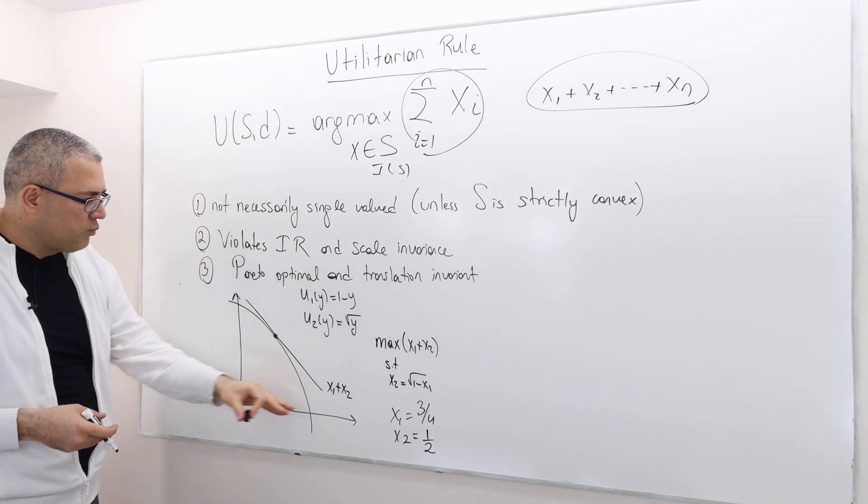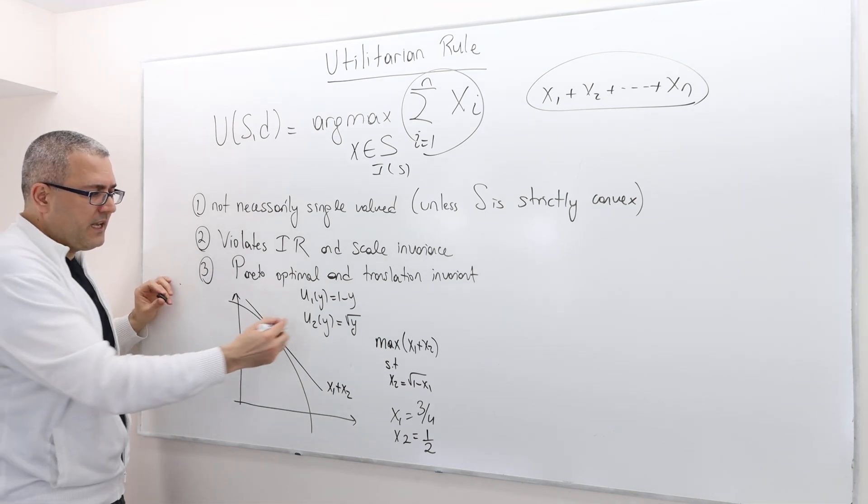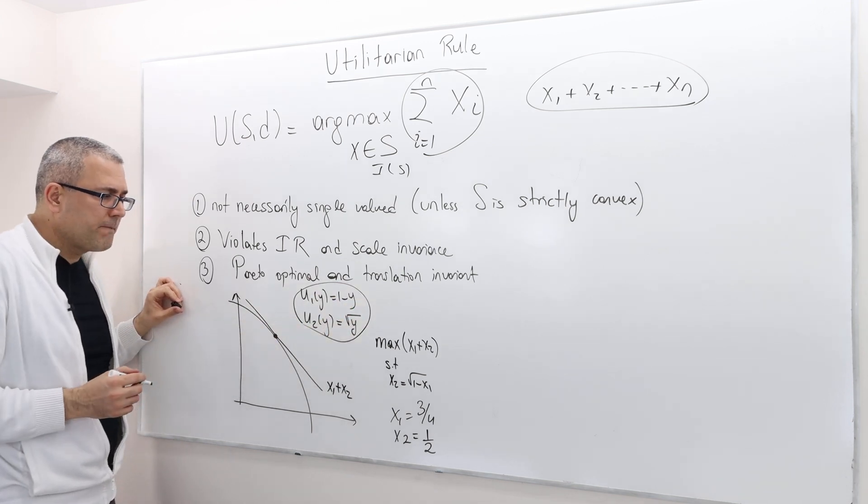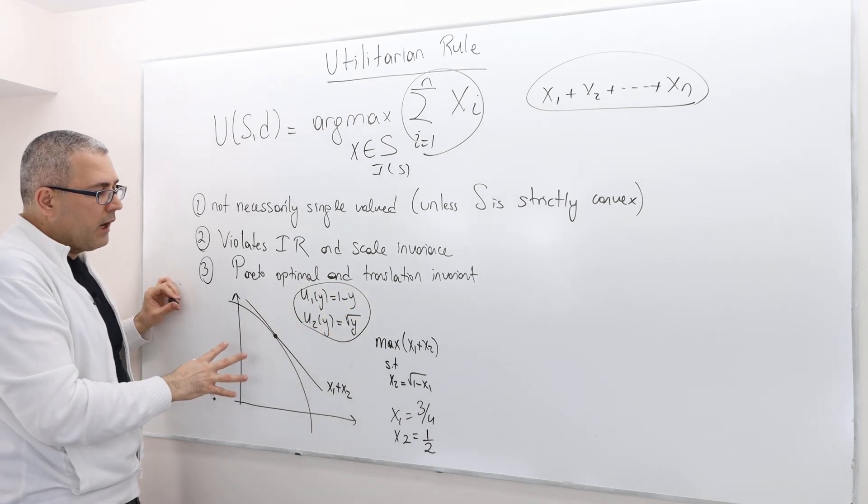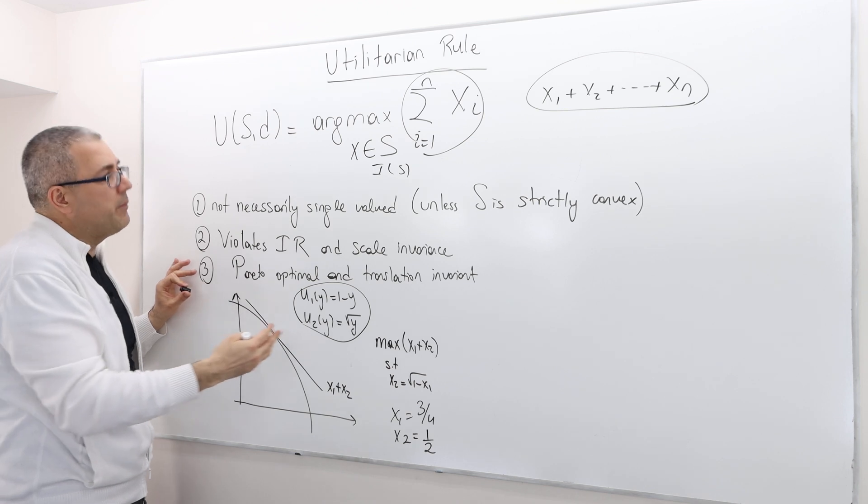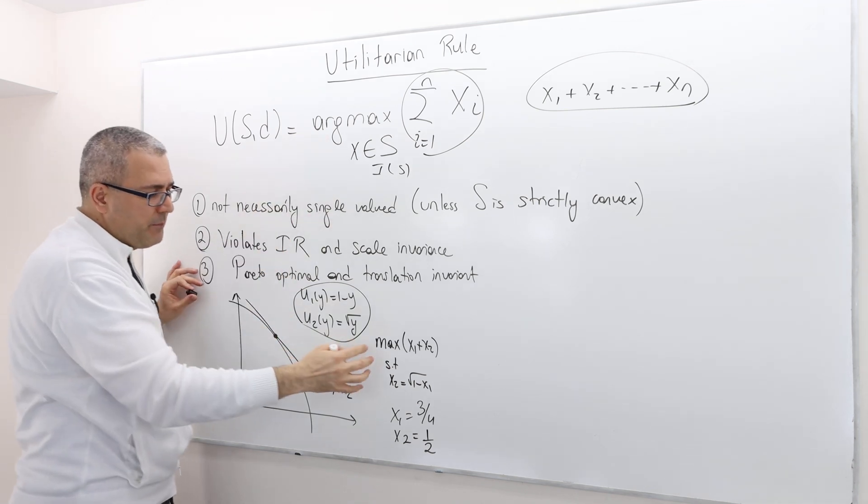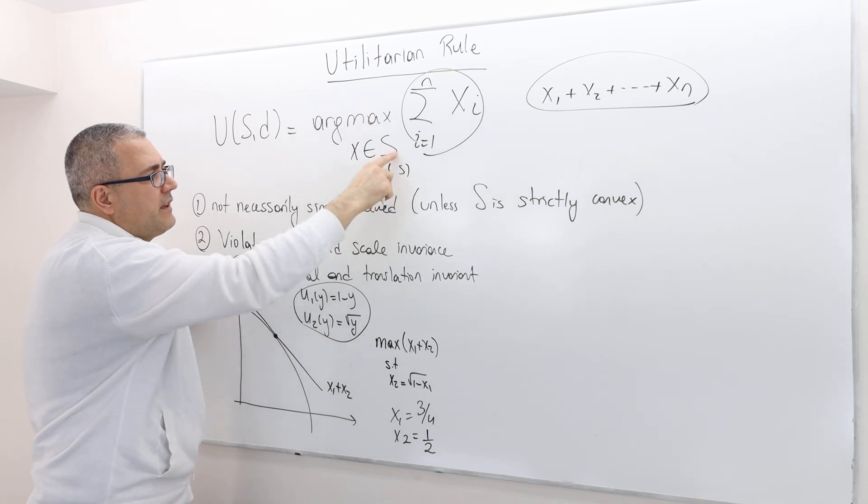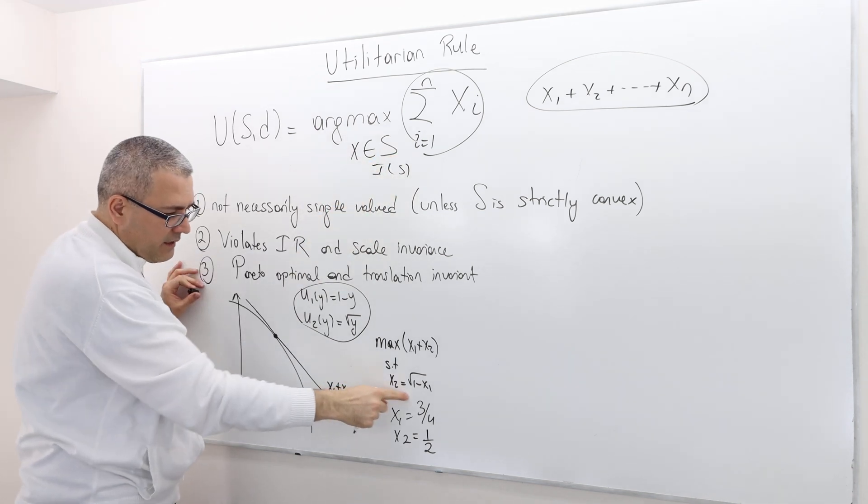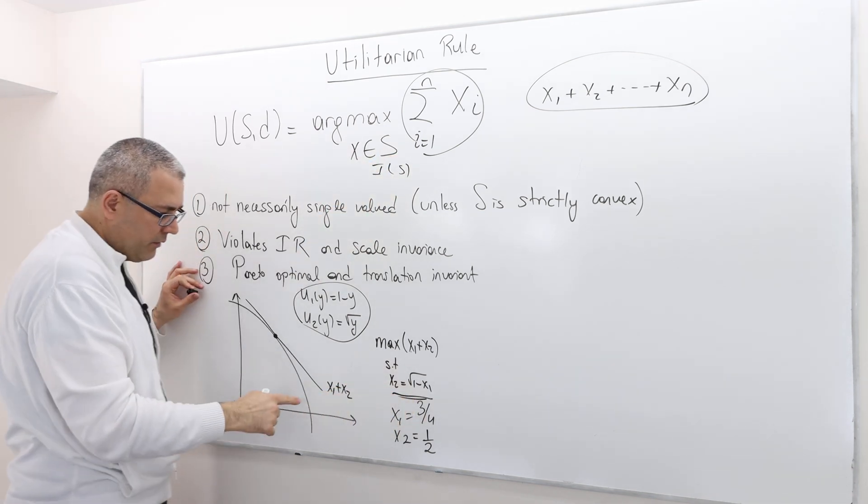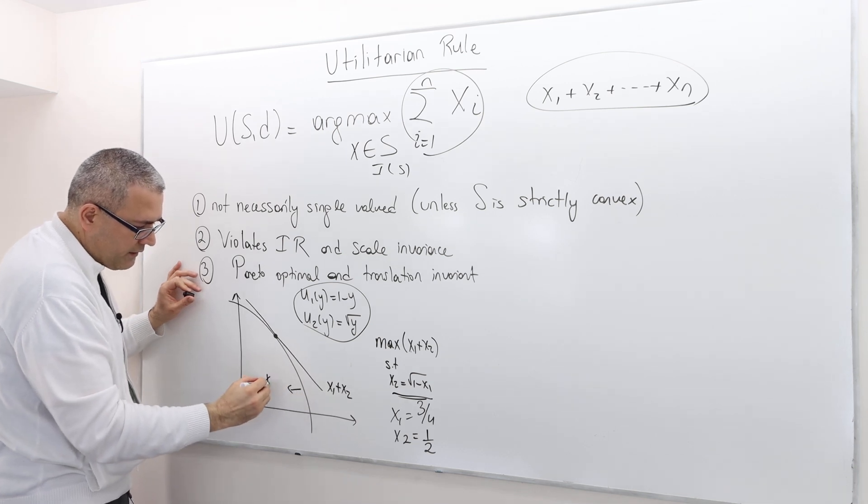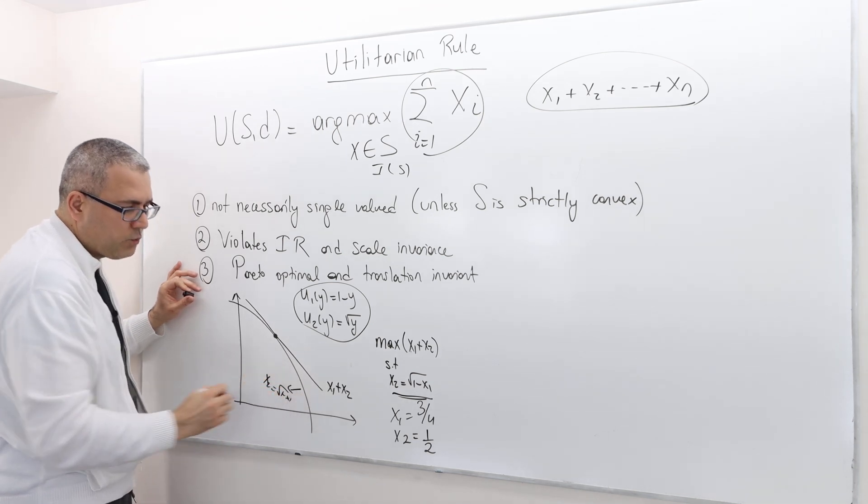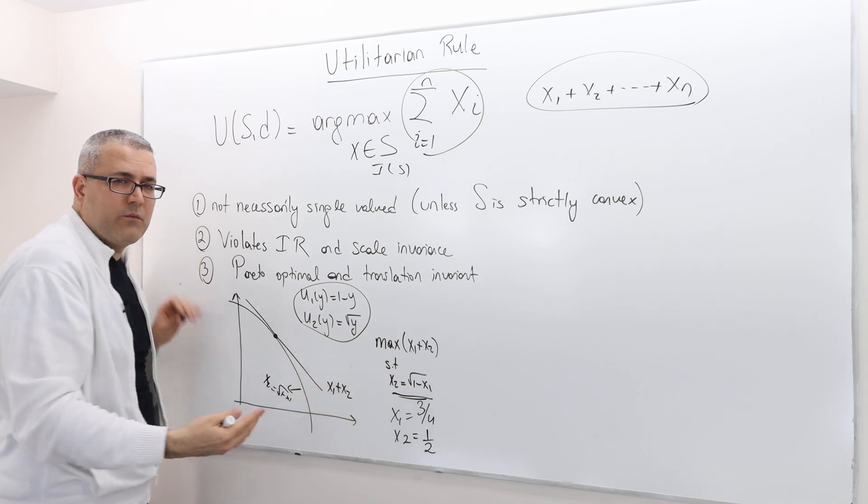Here is one example, the same example I keep doing. According to this rule, we find the argument that maximizes x1 plus x2. Remember, the set S here is coming from this. So this curve is x2 equals square root of 1 minus x1. So if you solve this, it's simple.